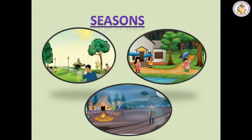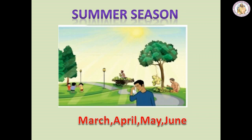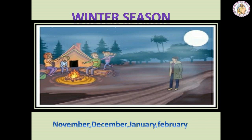Now we are going to learn about the seasons. We have three seasons: Summer Season, Rainy Season and Winter Season. We have the Summer Season in the months of March, April, May and June. The Rainy Season falls on July, August, September and October. We have the Winter Season in the months of November, December, January and February.